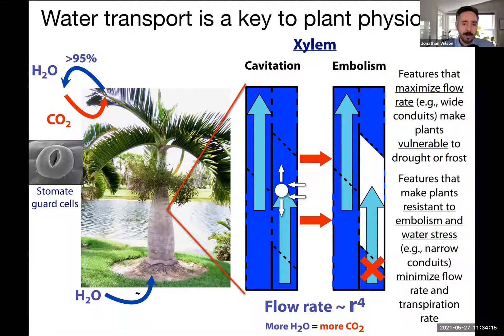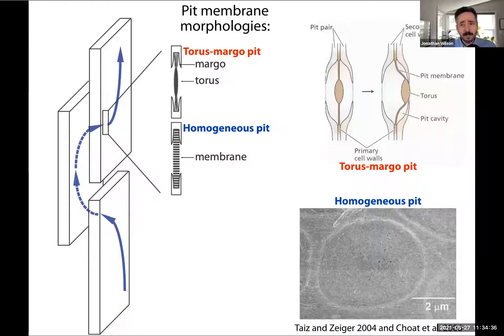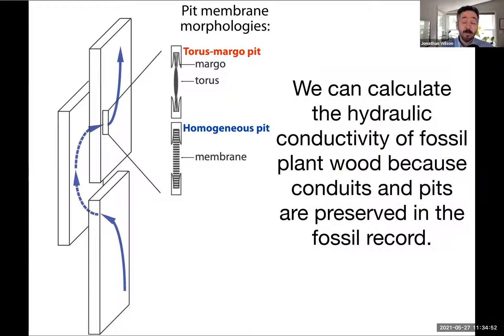If we zoom into the tracheids, we can see that the key features of xylem conductivity and safety come from porous structures called pits on the walls. There are two common kinds in extant seed plants, but many kinds in the fossil record. The morphology of these structures has a strong effect on the ability of water to pass from one cell to another, as well as the ability to prevent, contain, or repair embolism. Importantly, we can actually calculate the hydraulic conductivity of fossil plant wood because we have a beautiful record of conduits and pits in the fossil record.